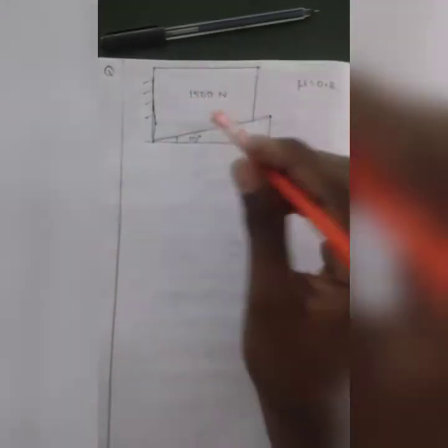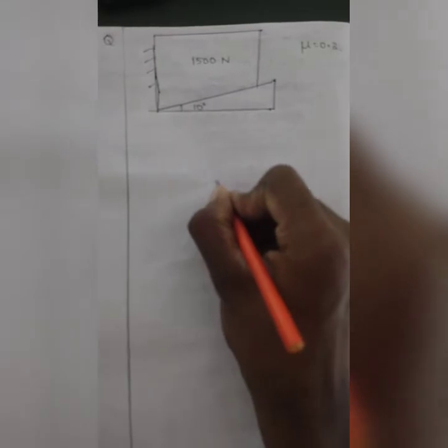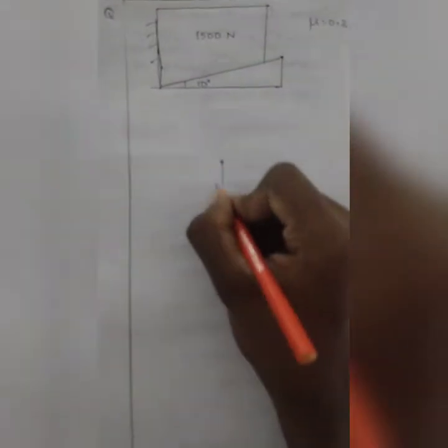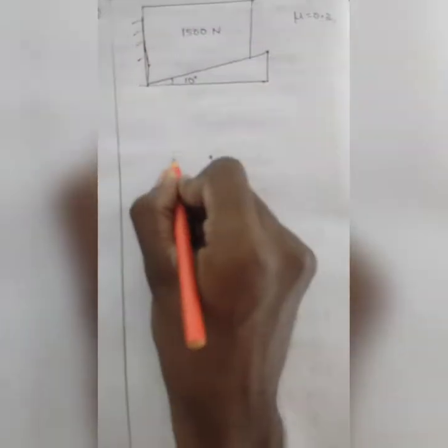First, we have the free body diagram for the block. The block is 1,500 N. It is the normal force.